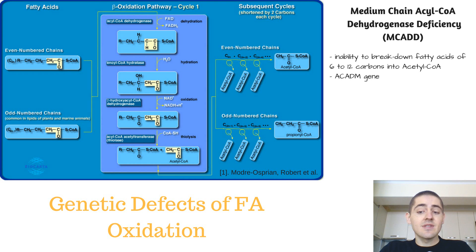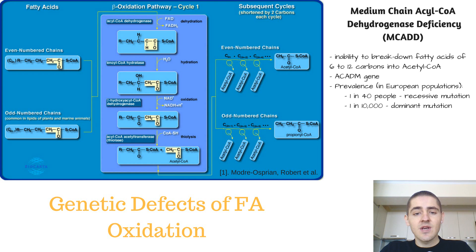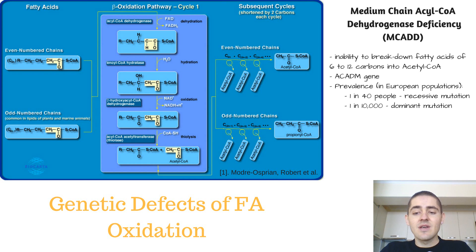The health consequences of this can be very detrimental. This is one of the most, if not the most, common genetic defects in the catabolism of fatty acids. In European populations, the frequency of individuals who carry one mutant allele — making it a recessive mutation — is about 1 in 40 people, while those who carry two mutant alleles, leading to the full-blown manifestations of the disease, is about 1 in 10,000 people.